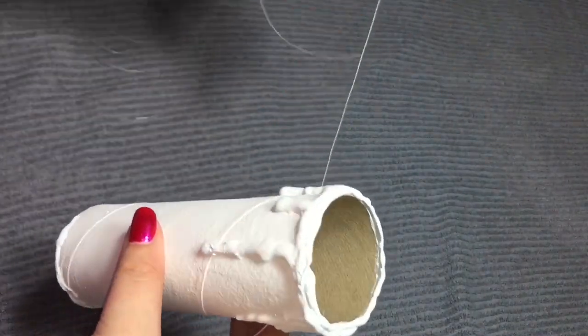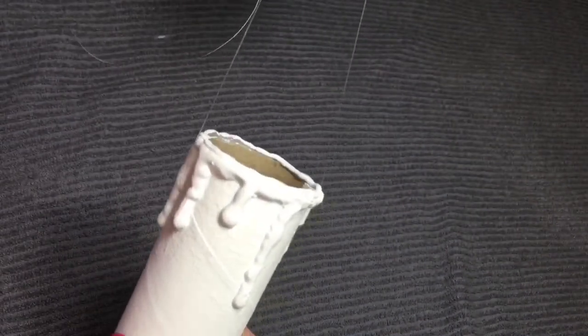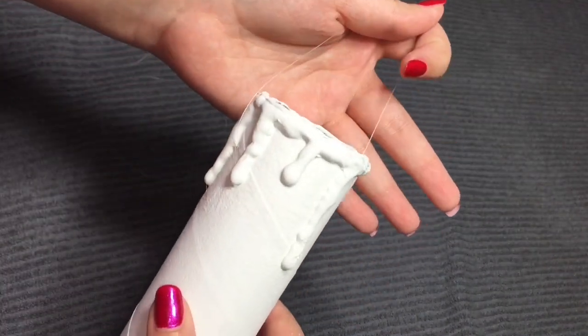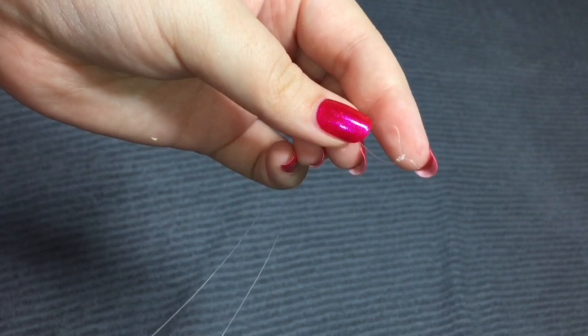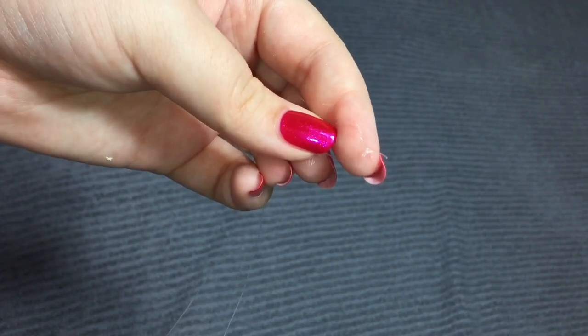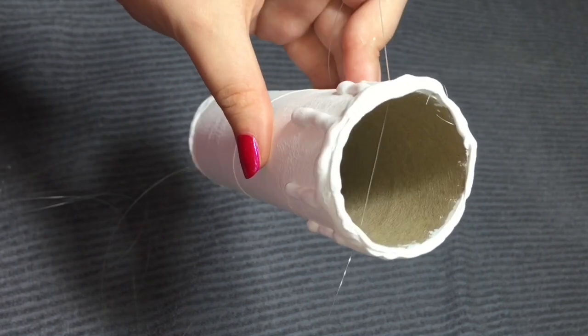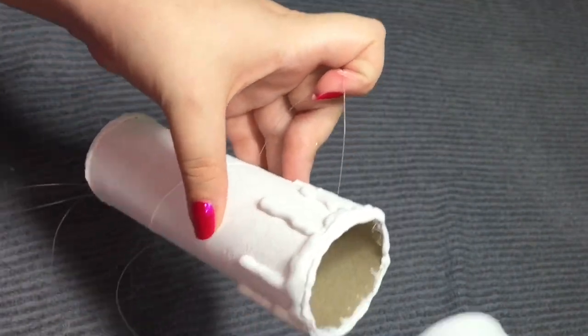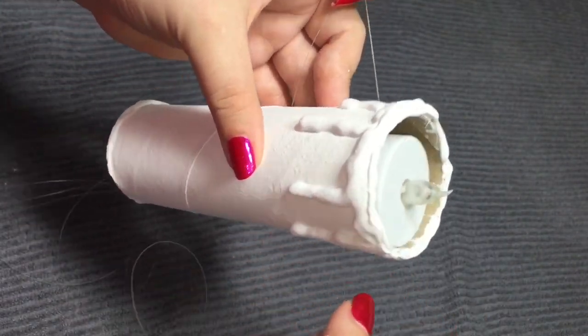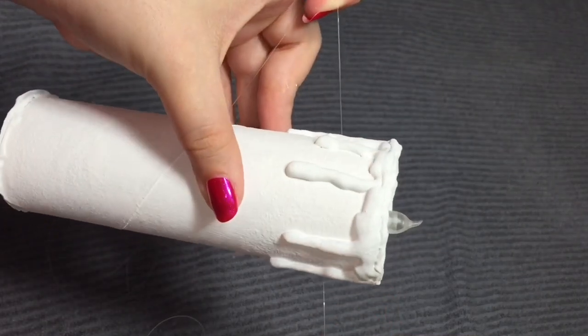Then go ahead and tie a knot at the end of the strings. When the string is hanging from the ceiling, your tea light candle should rest on top of the string like so. That way you don't have to glue it in and you can change it out when the battery dies.